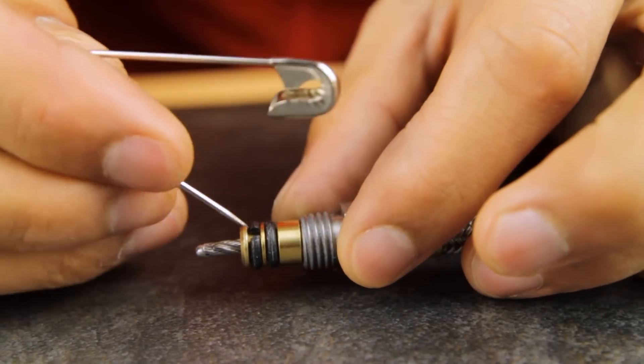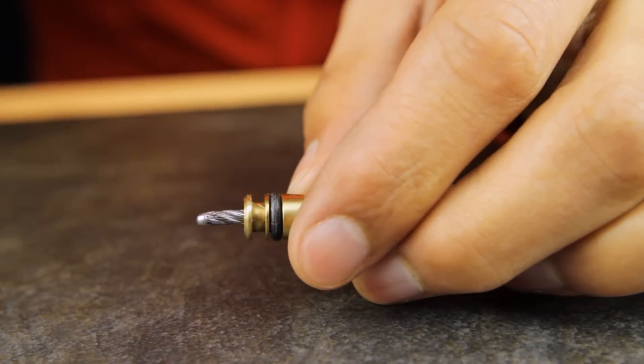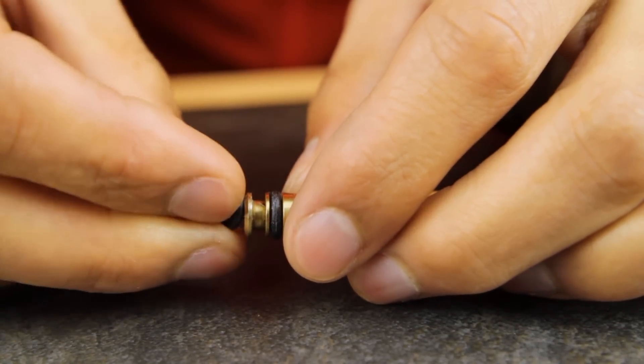Inspect the O-rings. If they are cracked or damaged, remove them with a safety pin and replace them immediately with new ones from the service kit.